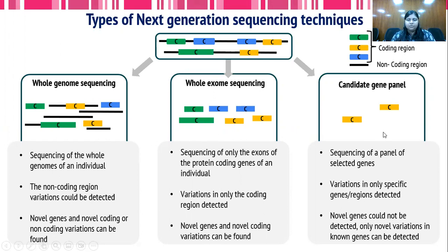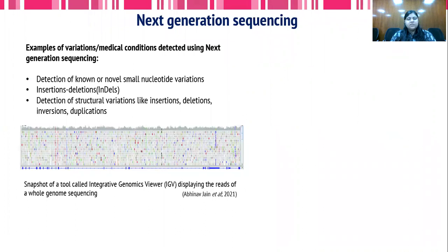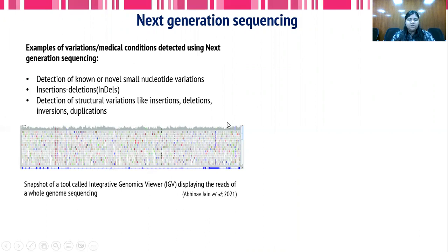Based upon the application or question in hand, we can choose which technique to apply. Next generation sequencing is used for detection of novel or known small nucleotide variations, indels, or structural variations like insertions, deletions, and duplications. Here is a snapshot of a tool known as Integrative Genomic Viewer, wherein the reads of a next generation sequencing experiment for a region in an individual are clearly depicted, showing the actual coverage of different sites in the DNA of that individual.